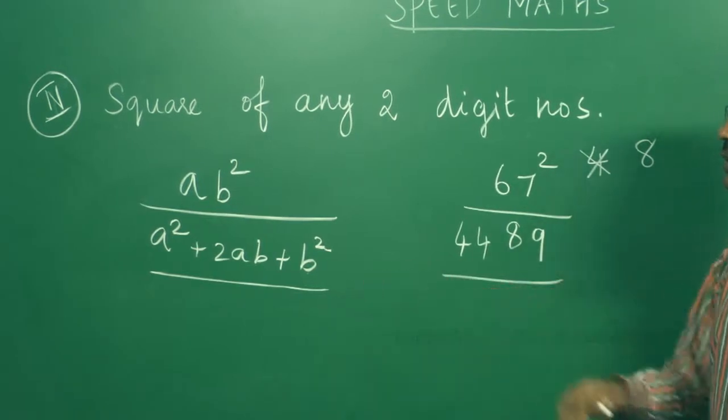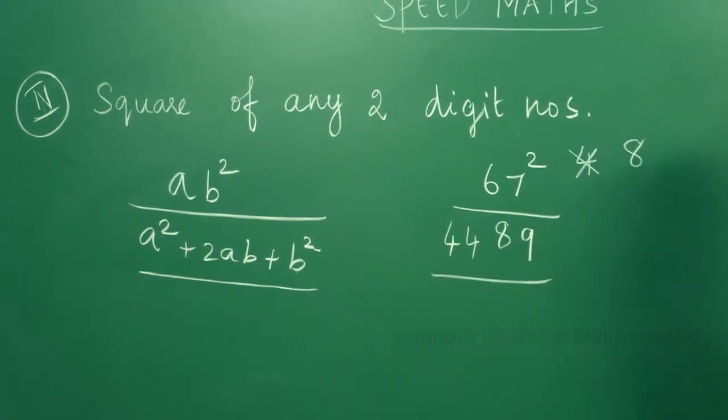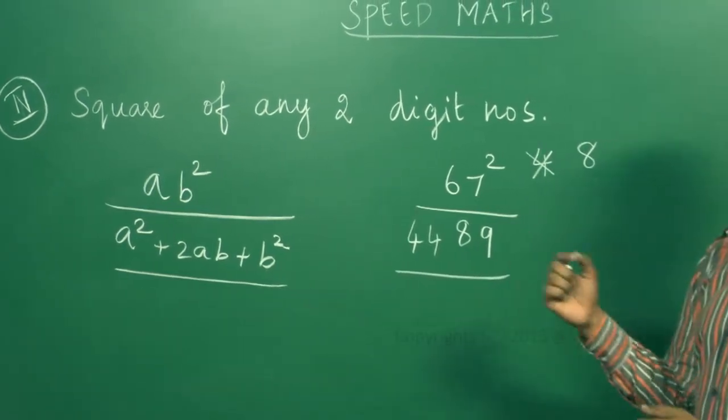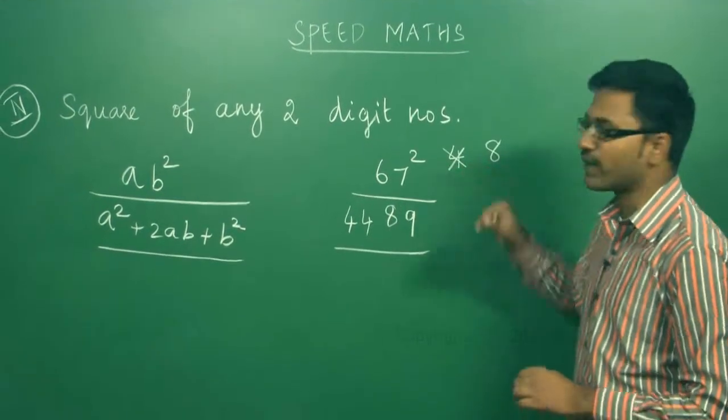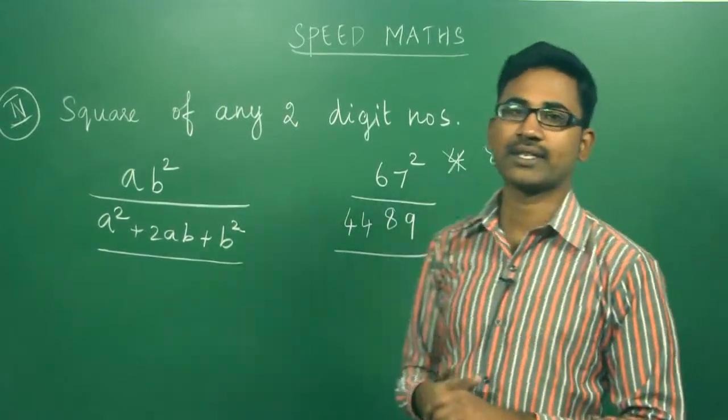If it is easy, if you remember the formula (a+b) whole square = a² + 2ab + b², accordingly you can square the numbers and add them. You can find the square of any two-digit number.